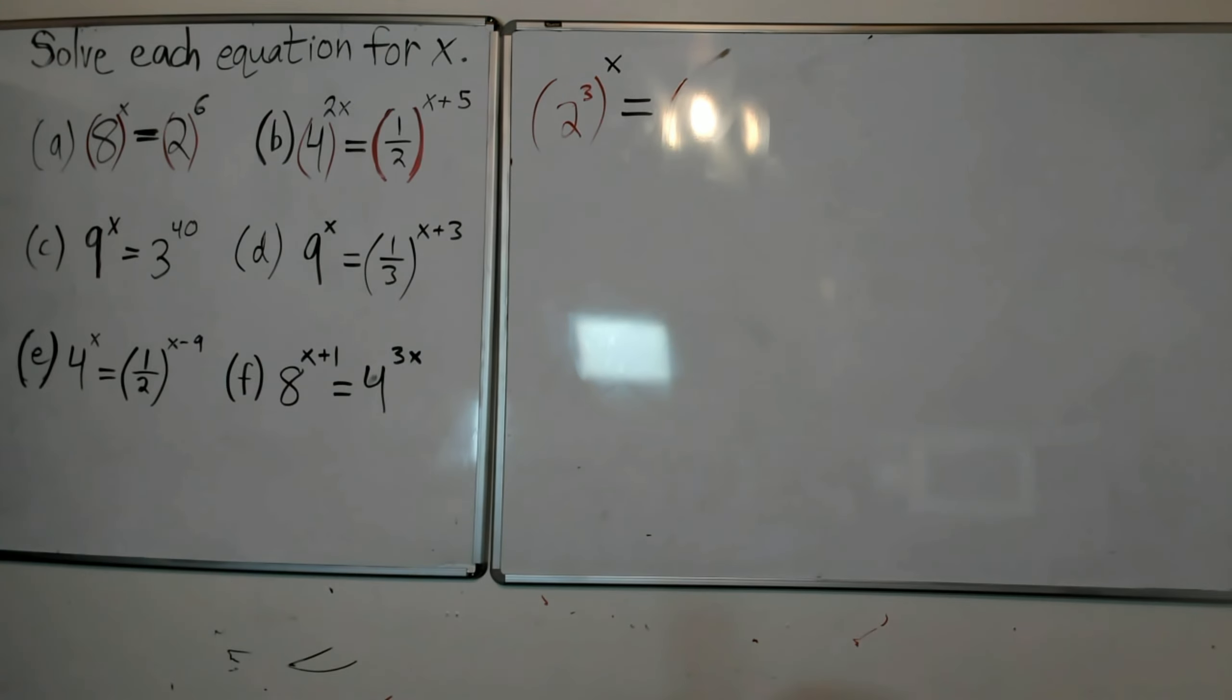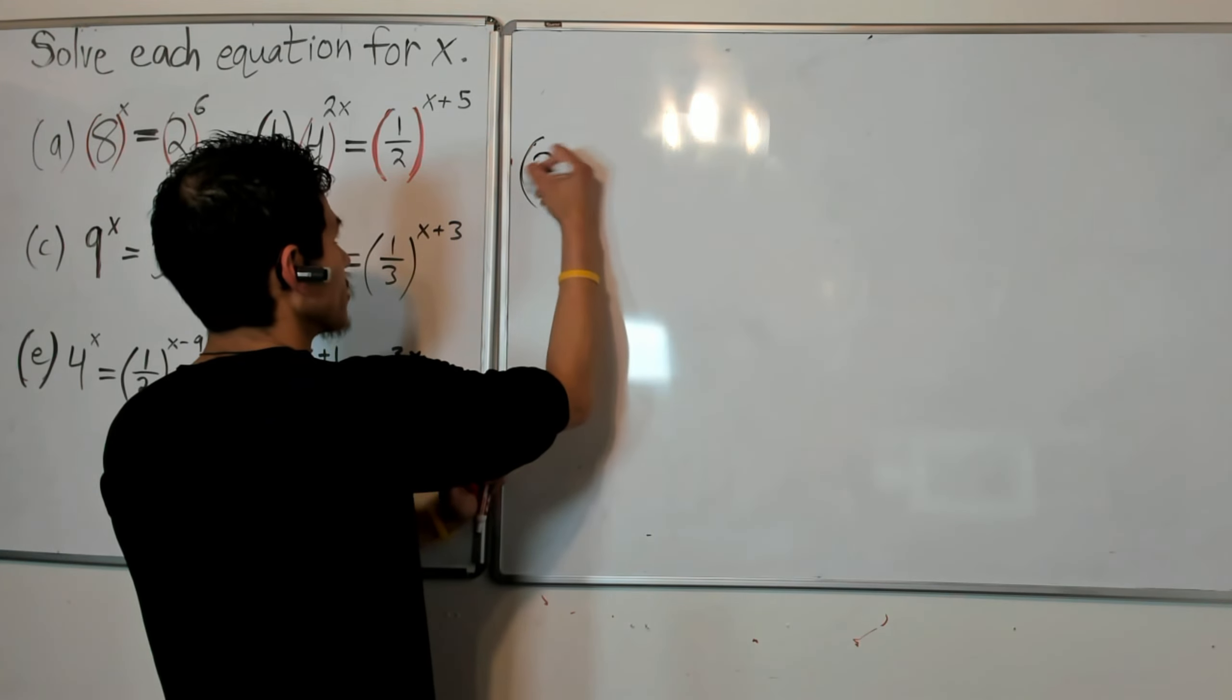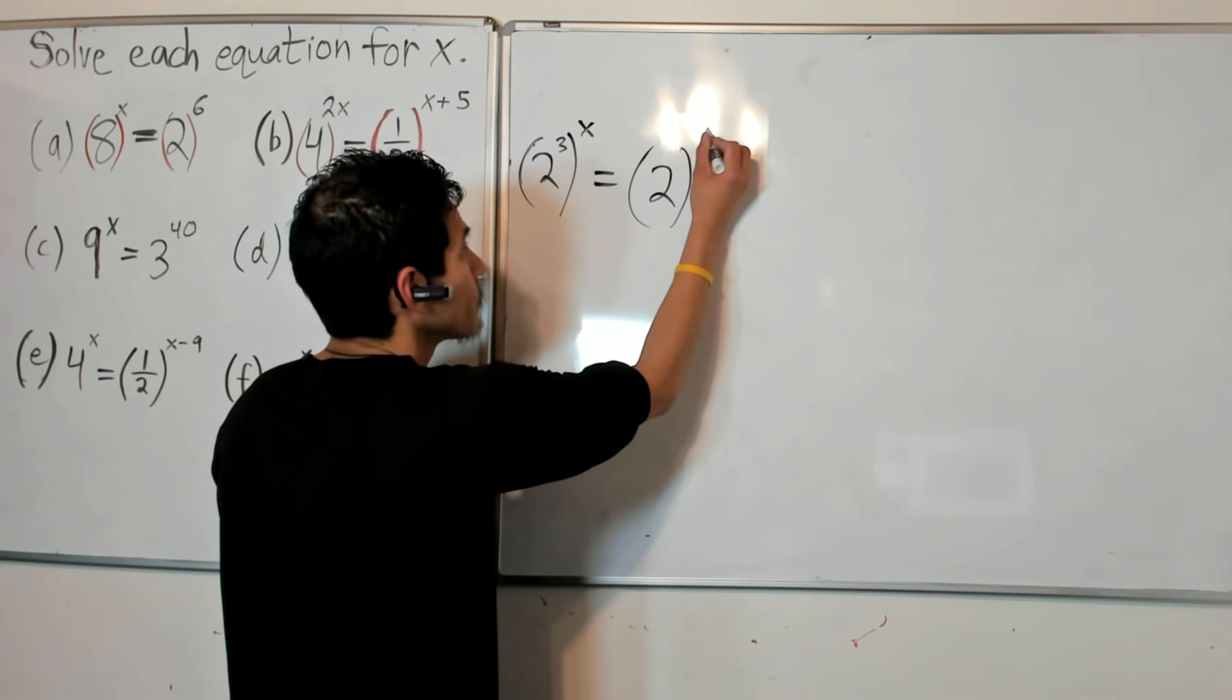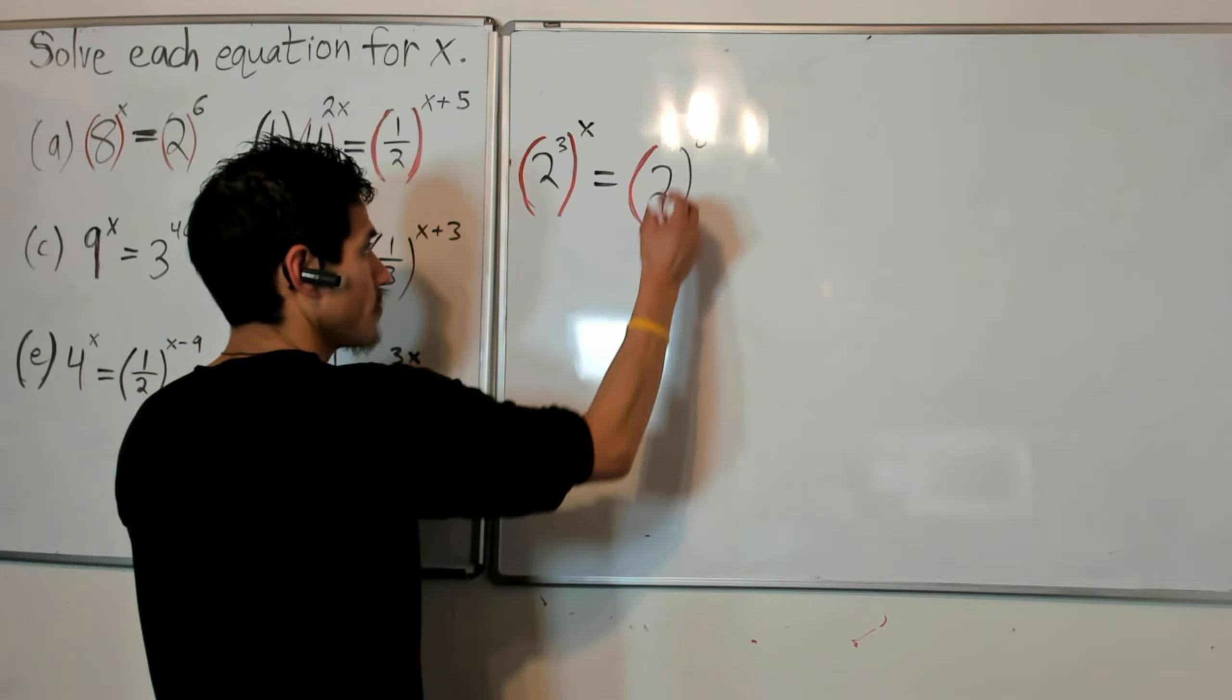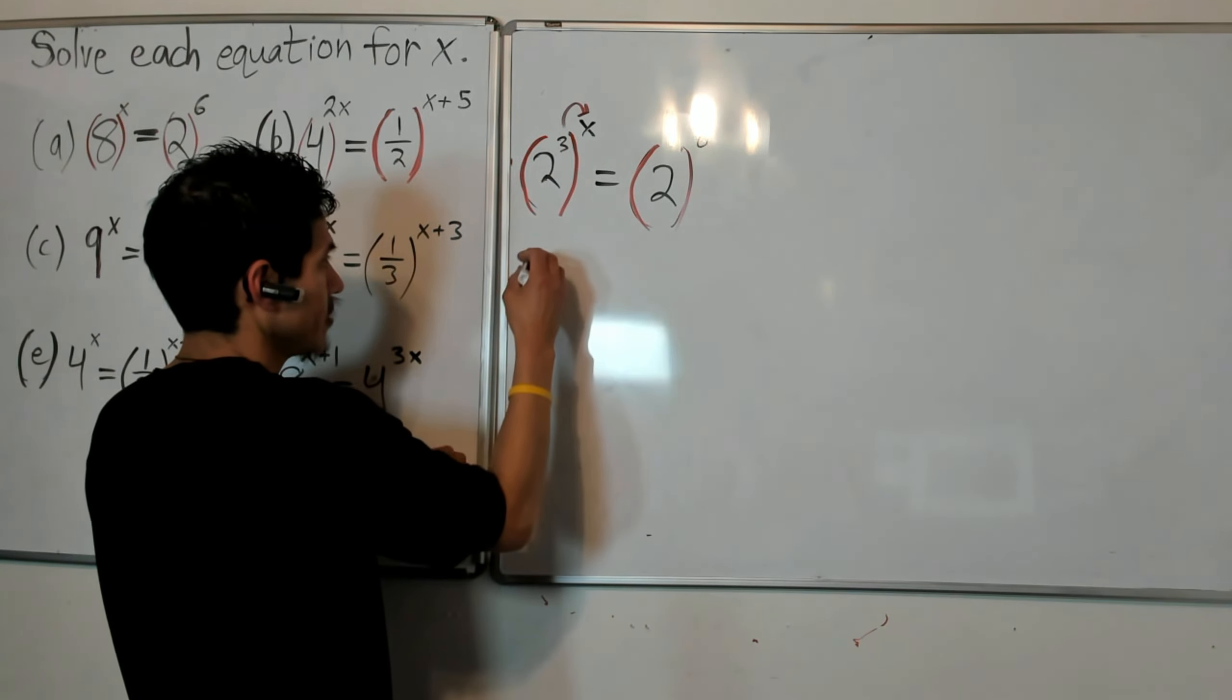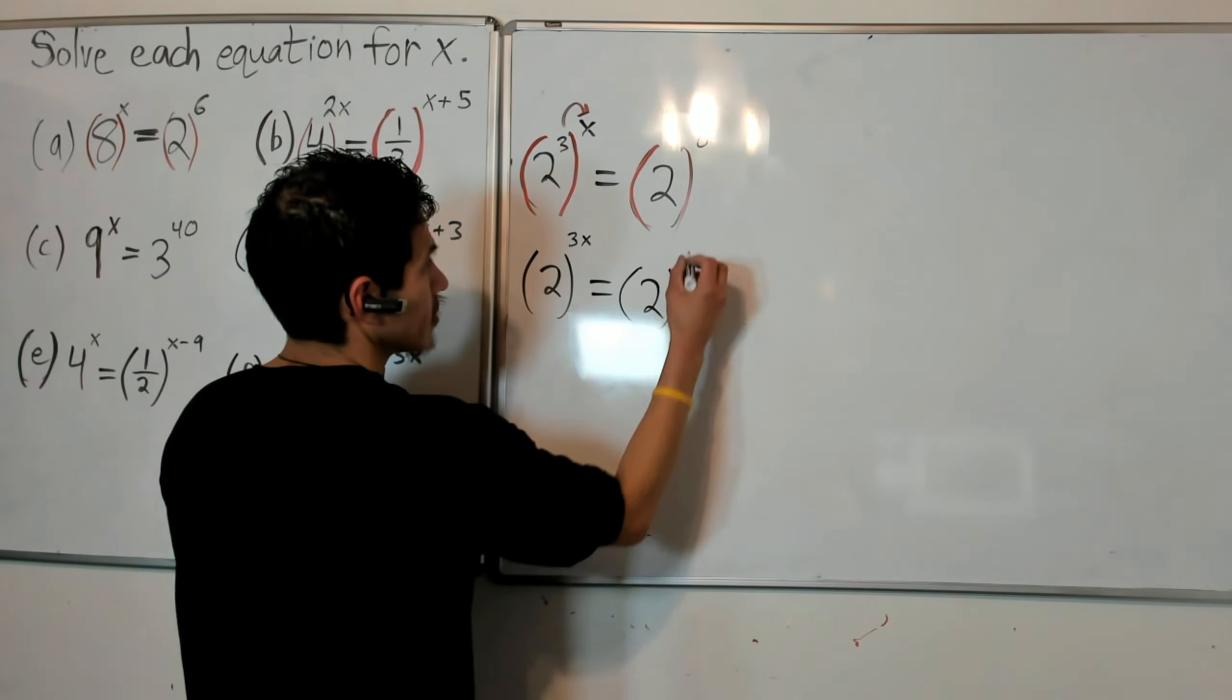So I'm going to replace my 8 with 2 to the 3 to the x power, and then I keep my 2 to the 6. Now we use one of the properties of exponents where I can multiply this exponent x by 3. So then I have 2 to the 3x equals 2 to the 6.